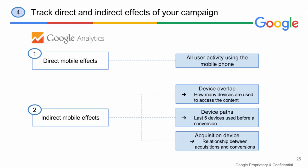Lastly, the tracking part. You should upgrade your analytics code so that you can collect additional data. In the analytics account you can then see the device overlap section — which shows how many devices are used to access the content — the device path section, which shows the last five devices used before a conversion, and the acquisition device section, which reflects the relationship between acquisitions and conversions. In the comment section below the webinar, you can find all necessary links for upgrading the code and tracking cross-device user behavior.